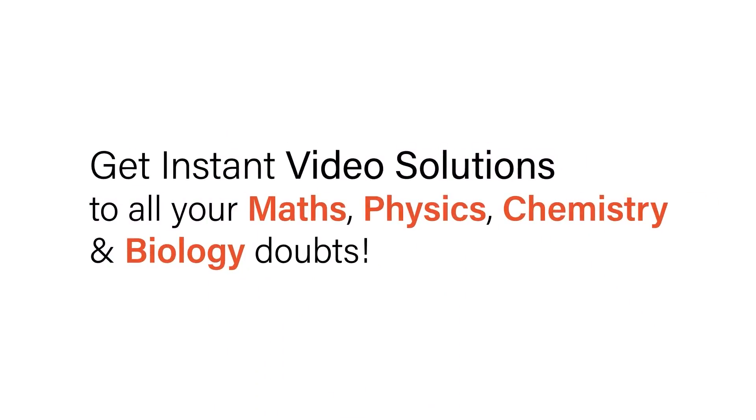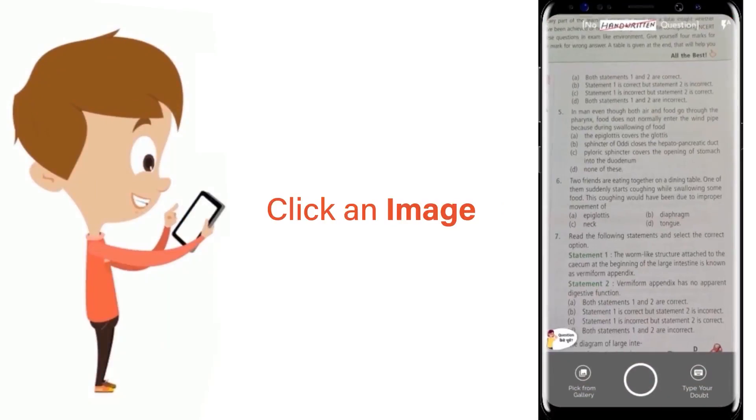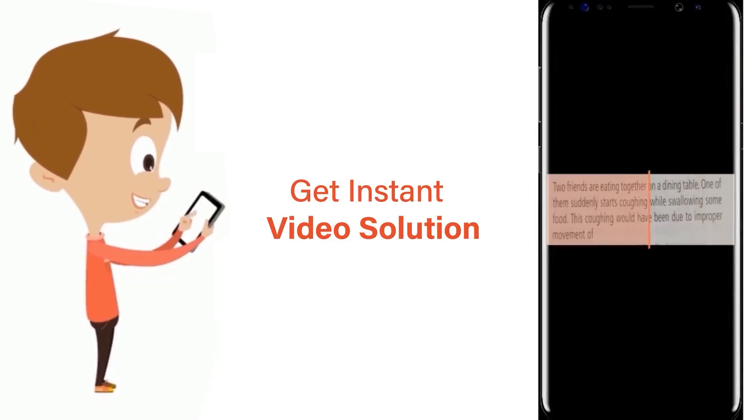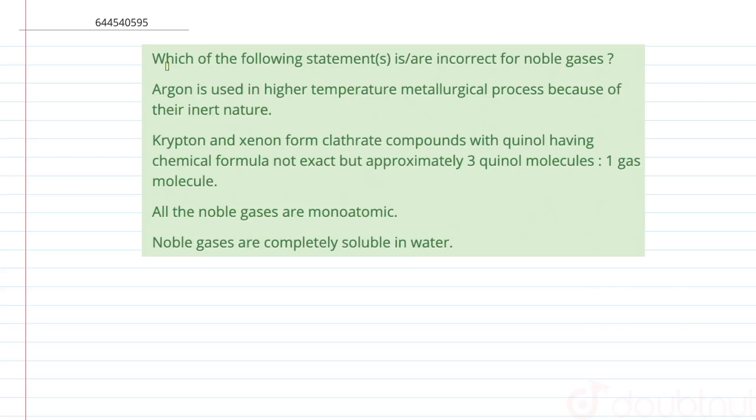With Doubtnet, get instant video solutions to all your math, physics, chemistry, and biology doubts. Just click the image of the question, crop the question, and get instant video solution. Download Doubtnet app today. Which of the following statements is or are incorrect for the noble gases?